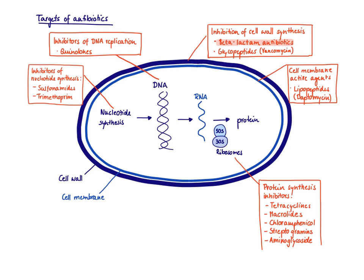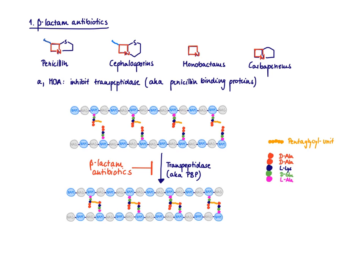One important class of drugs are the beta-lactam antibiotics. A second, much smaller class are the glycopeptides with the major example vancomycin, which also inhibits cell wall synthesis but slightly different. Let's start talking about the beta-lactam antibiotics.